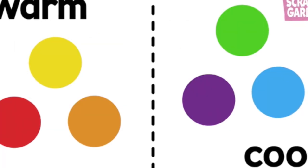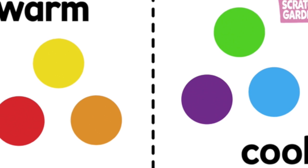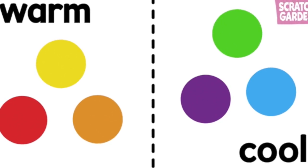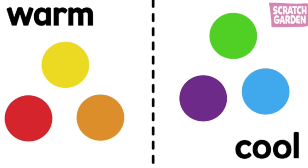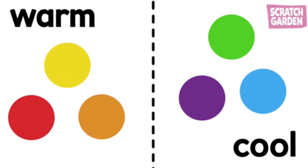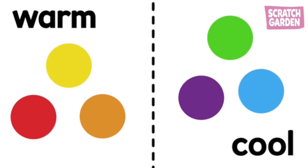An easier way to remember is that red, orange and yellow are always warm and blue, green and purple are always cool. If you're not sure which colors are warm or cool, pause the video and come back here or take a screenshot.